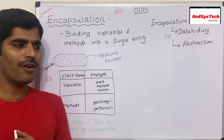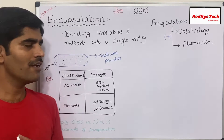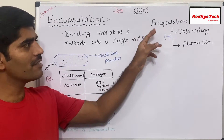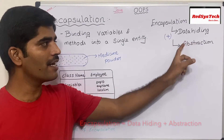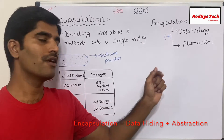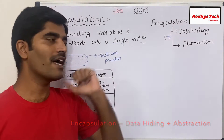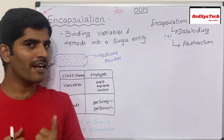Now let's get deeper into encapsulation. Encapsulation is a combination of data hiding and abstraction. Let's go one by one. What is data hiding? Hiding the data is called data hiding.